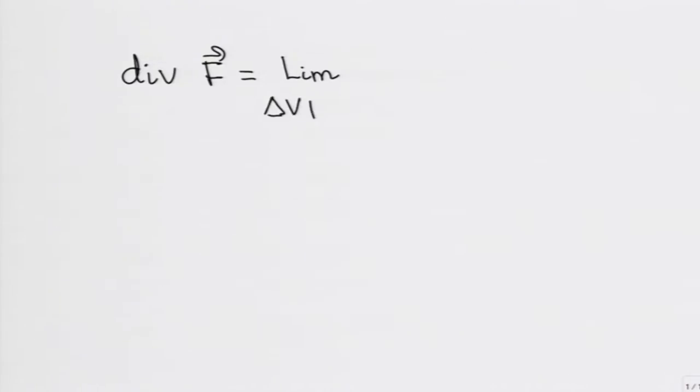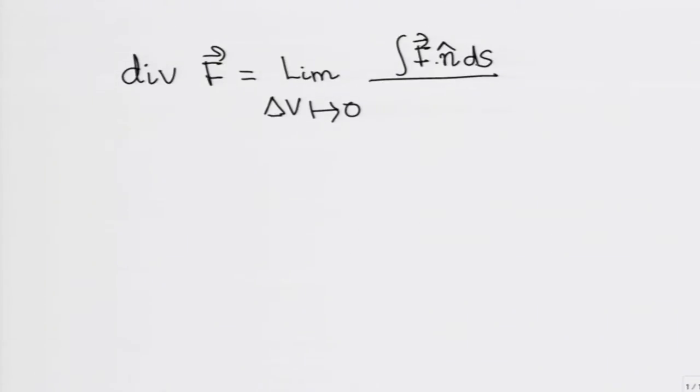You are all accustomed to defining divergence in terms of its differential expression. What I did yesterday was to define divergence of a vector field F as a limiting value when I take a very small volume delta V going to zero. I said it is the ratio of the surface integral of the vector field F dot N dS divided by delta V, in the limit of delta V going to zero.